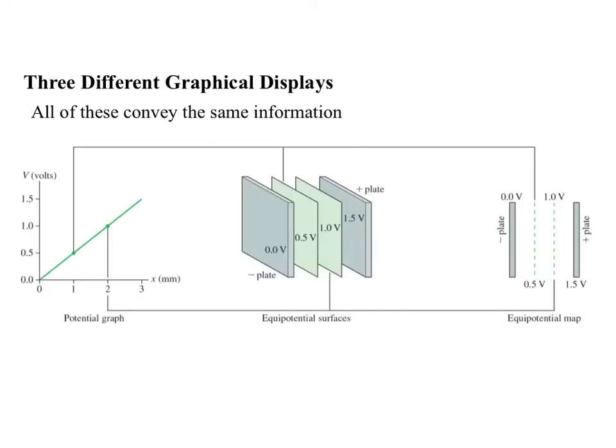There are several ways that we can describe the potential at different points in space. These are three common ways of doing it, and we'll use all of them at different features. We can draw them as a potential graph. We can sketch what are called equal potential surfaces, or we can make what's called an equal potential map. And over the next couple of slides, we'll talk about these each explicitly.